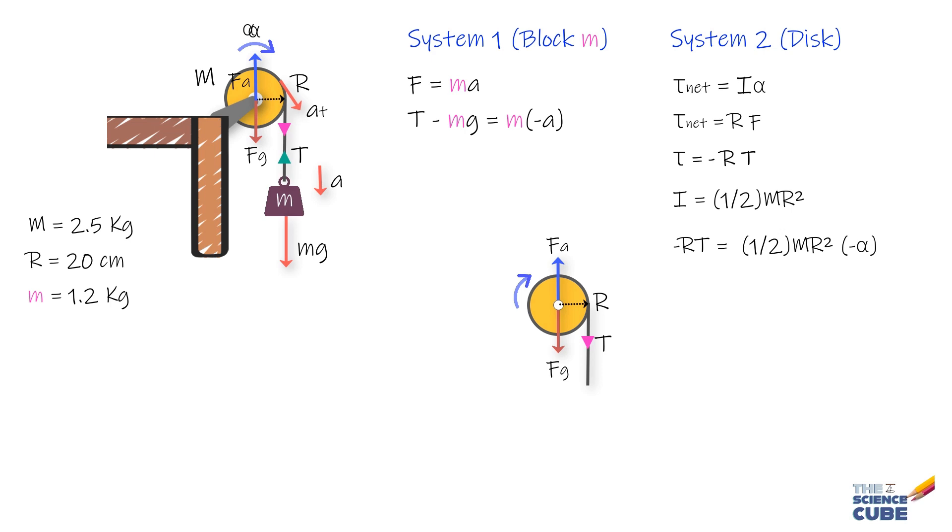in the fact that the cord does not slip, we can say that the magnitude A of the block's linear acceleration should equal the magnitude of tangential linear acceleration of the rim of the disc.